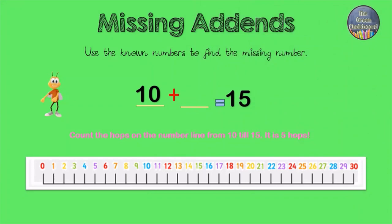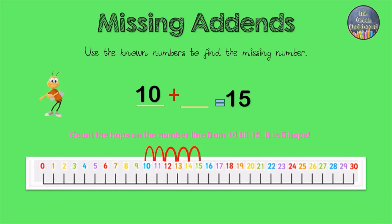Count the hops on the number line from 10 to 15. It is 5 hops.